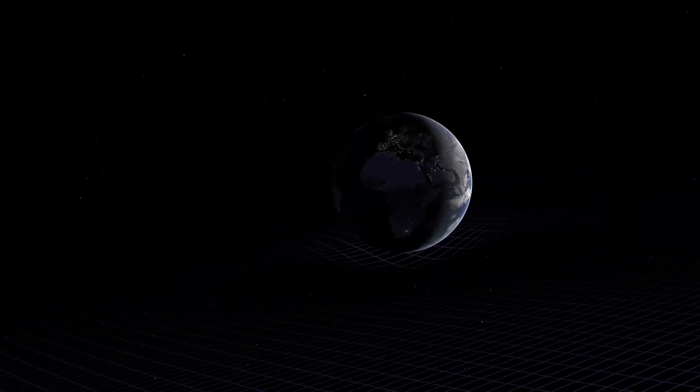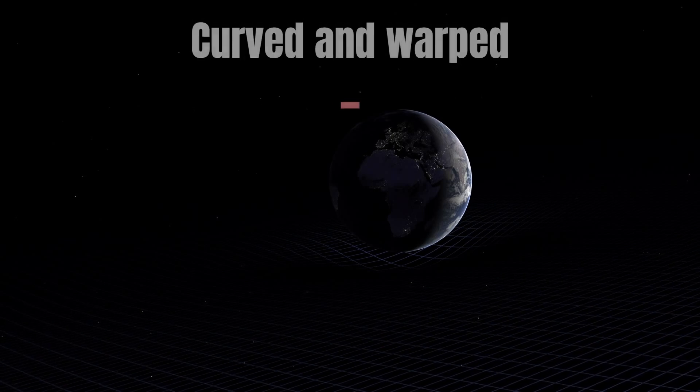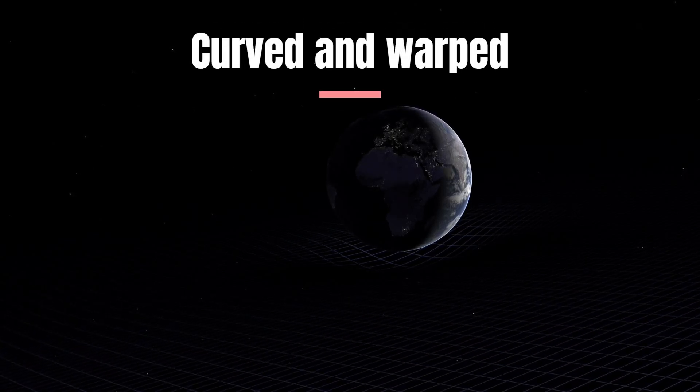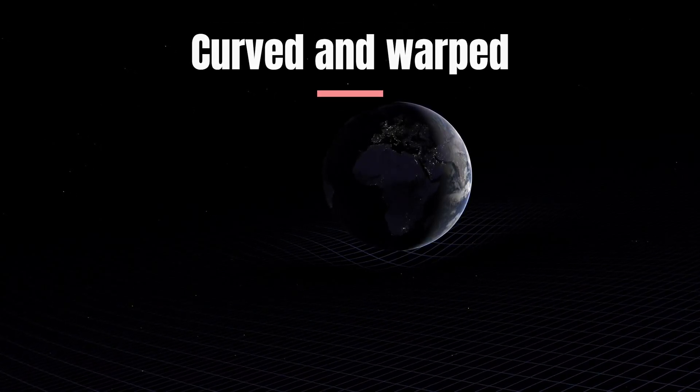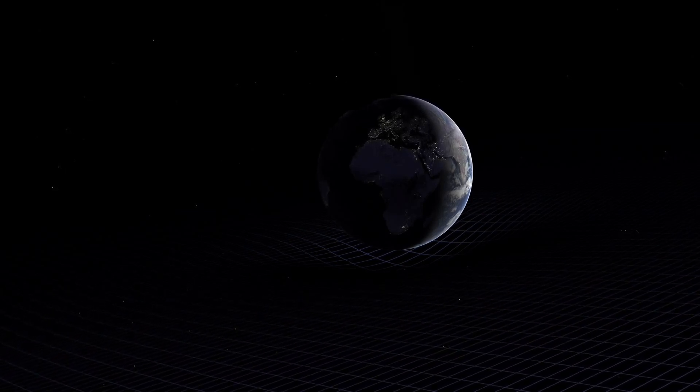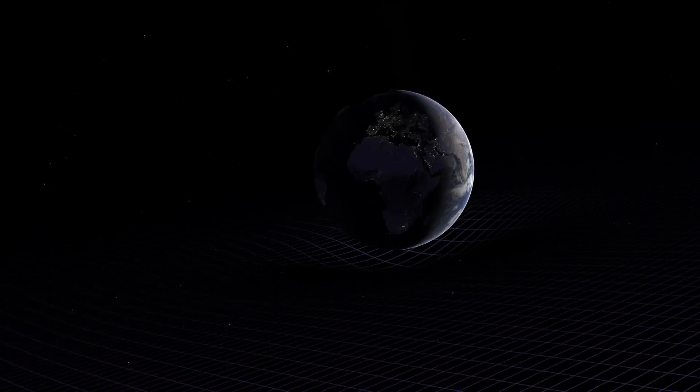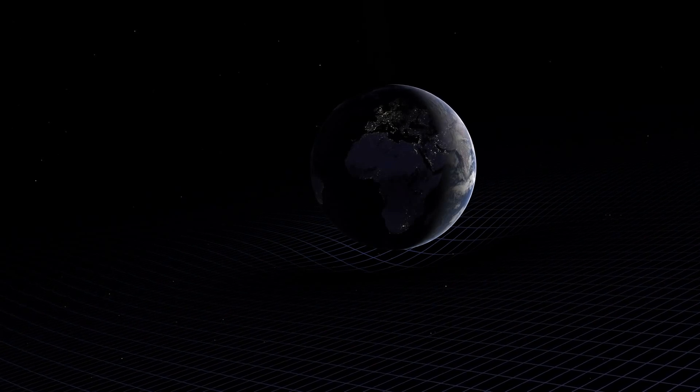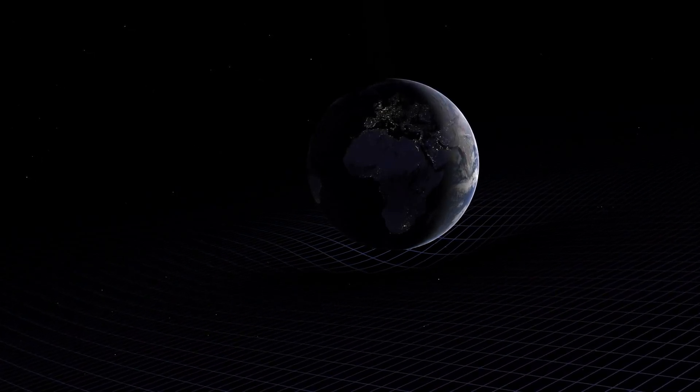This space-time fabric is not static but dynamic, and it can be curved and warped by massive objects such as stars, planets, and even black holes. Imagine this fabric as a trampoline, with massive objects creating depressions that cause smaller objects to follow curved paths around them.